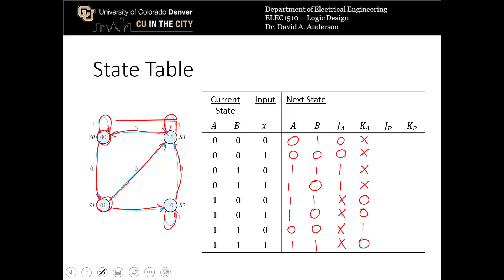For the B flip-flop inputs: row 1, B goes 0→1, giving J=1, K=X; row 2, B goes 0→0, giving 0 and X; row 3, B goes 1→1, giving X and 0; row 4, B goes 1→0, giving X and 1. Then the remaining rows give 1 and X, 0 and X, X and 1, and X and 0.